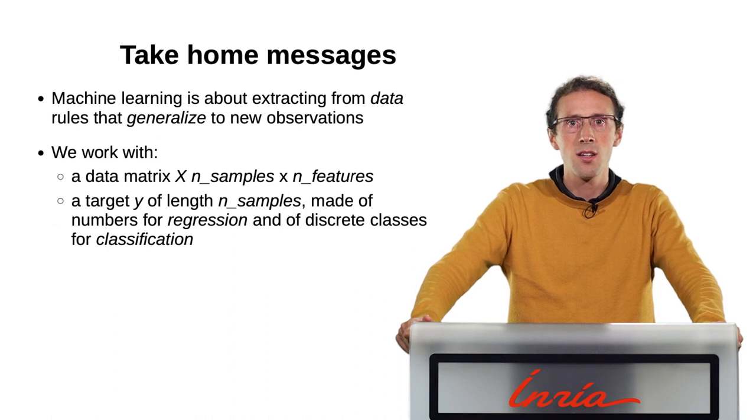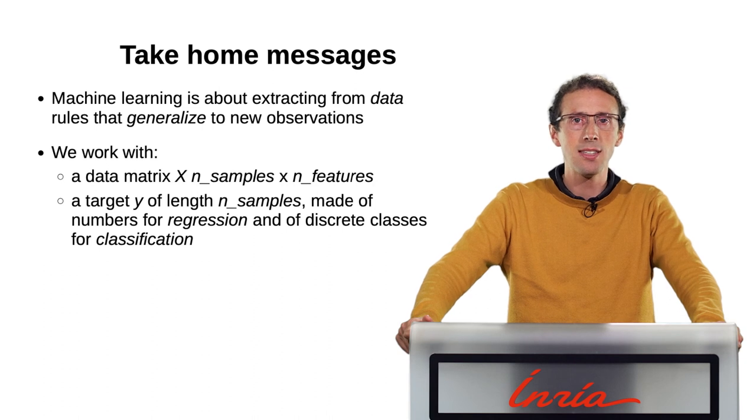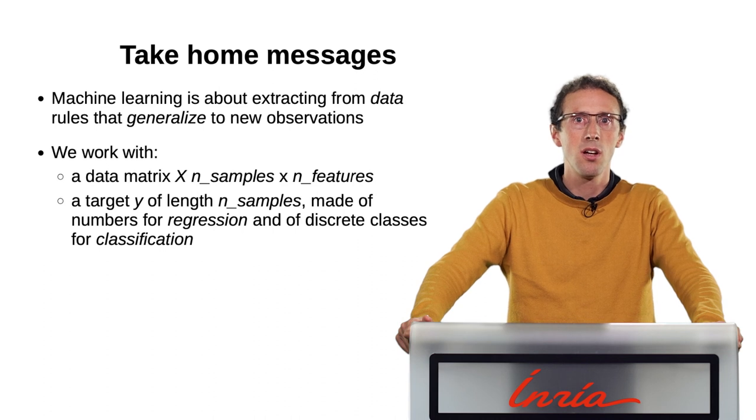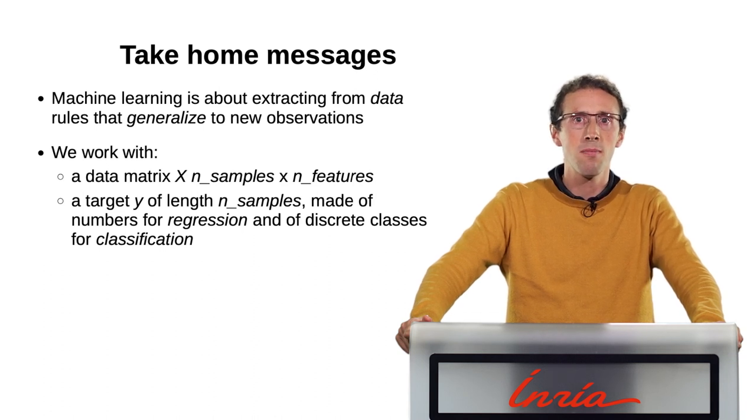To summarize, machine learning is about extracting from data rules that generalize to new observations. In practice, we will work with a data matrix that we will call X, with n samples rows and features columns. For supervised learning, we have a target vector Y of length n samples, which is made of numbers characterizing each observation for regression problems, and of discrete classes for classification problems.